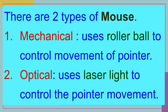There are two types of mouse: mechanical and optical. A mechanical mouse has a roller ball to control pointer movement. An optical mouse uses laser light to control pointer movement.